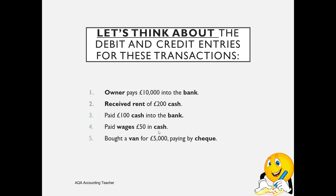Transaction 5: we've bought a van for £5,000, paying by cheque. Paying by cheque comes straight out of the bank account. The van is an asset — a non-current asset — so we debit the van account with £5,000. And we credit the bank account with £5,000 because the money has come out of the bank.